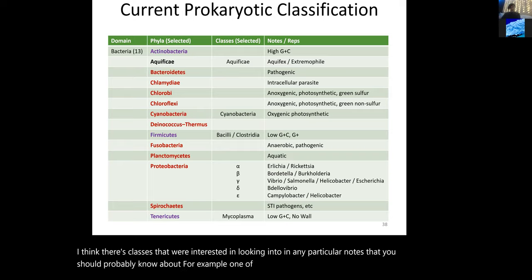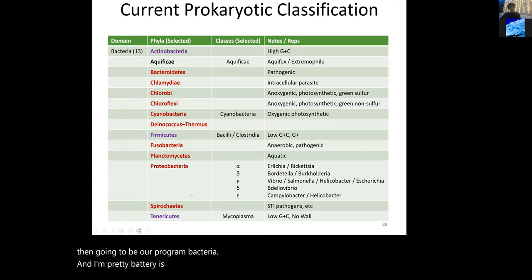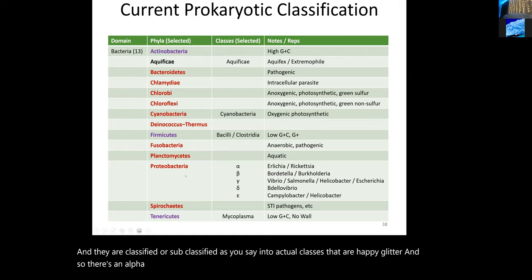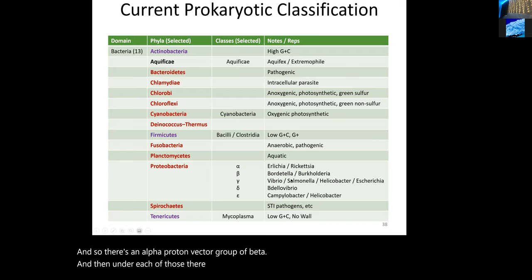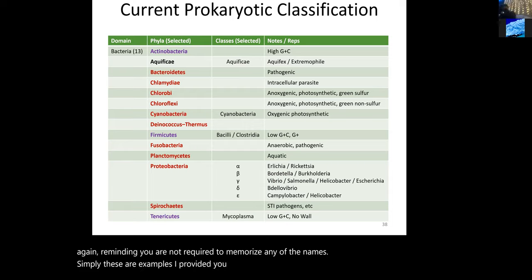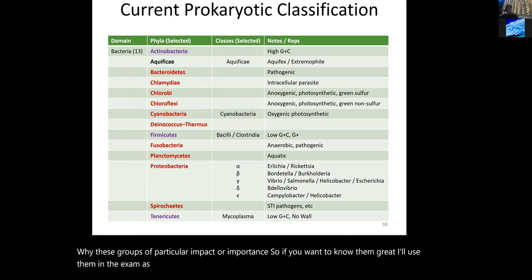We're focusing on about 13 different phyla of interest. One of the bigger groups is the proteobacteria, probably the largest group we'll look at. They are subclassified into classes with Greek letters — alpha proteobacteria, beta proteobacteria, and so on. Under each are highlighted organisms you should know, though you're not required to memorize any names. I'll use them as examples on the exam.